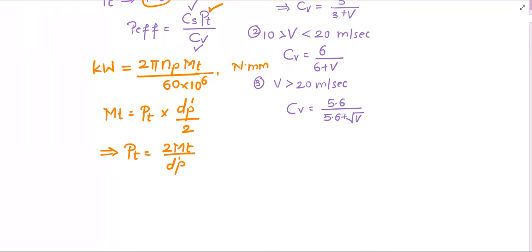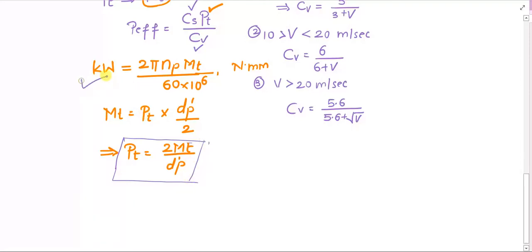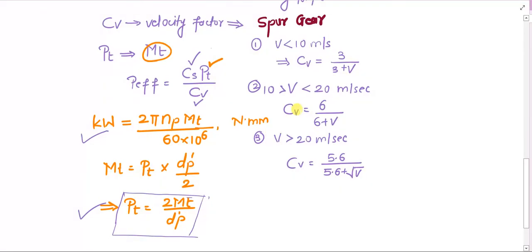Welcome back. In the last session we were discussing the effective load on the gear tooth. We arrived at the conclusion that the effective load consists of the service factor, the tangential load acting on the gear tooth, and the velocity factor. We also summarized how to determine the magnitude of the tangential load once the torque is available. The velocity factor cv depends on the range of velocity at which the gear is running.